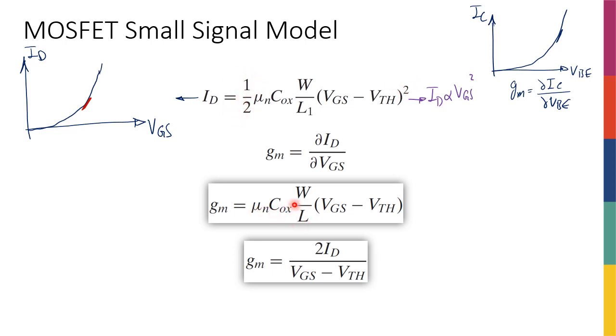I can see that there are similarities between this expression and that expression. I can see that if I multiply ID by 2 and then divide it by VGS minus VTH, I can get gm. So I can define gm as equal to 2ID divided by VGS minus VTH. You can use either of these expressions.